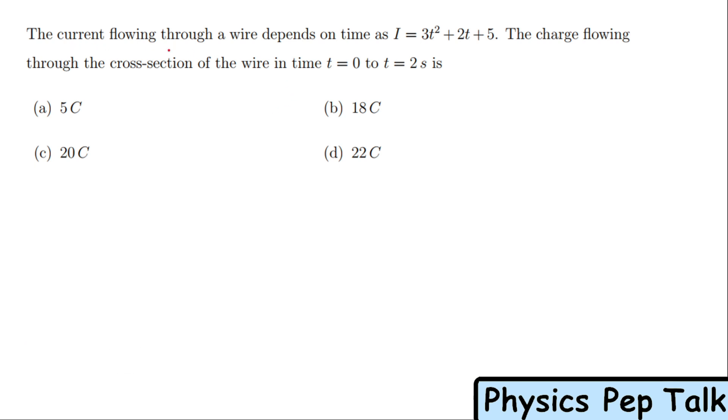The current flowing through a wire depends on time as i = 3t² + 2t + 5. The charge flowing through the cross-section of the wire in time t = 0 to t = 2 seconds. There's a wire and current is flowing according to this equation. They're asking us to find what charge is flowing in the cross-section from t = 0 to 2 seconds.